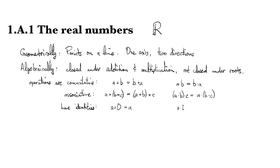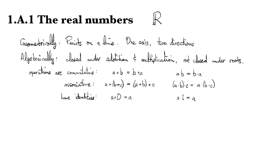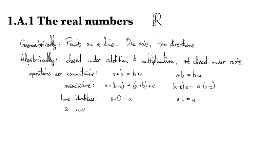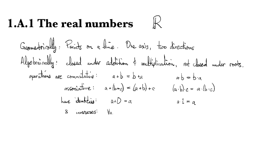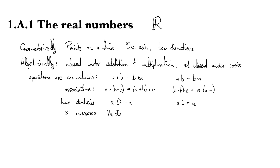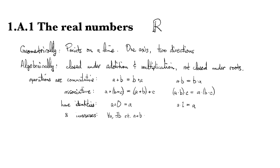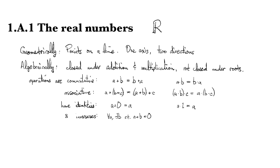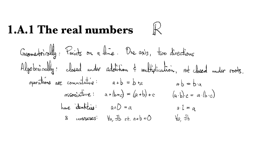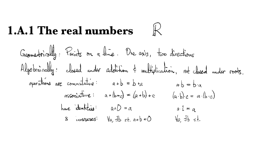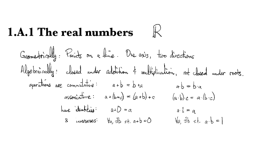We also have inverses. This means that for any a there exists a corresponding element b such that a+b gives me the additive identity. And for multiplication, for any a there exists a b such that a×b gives the multiplicative identity.